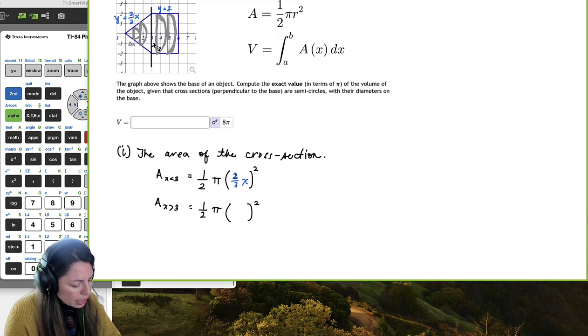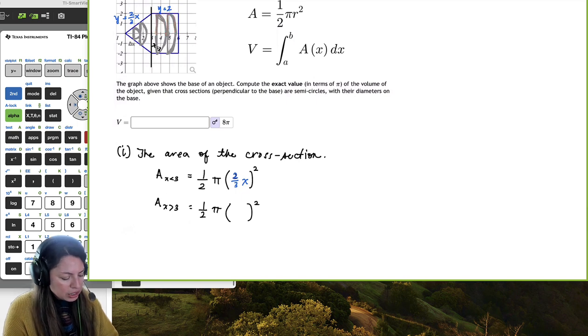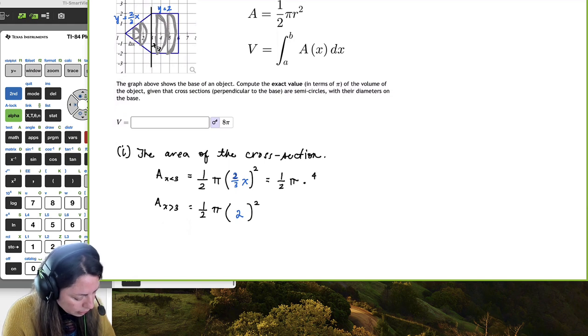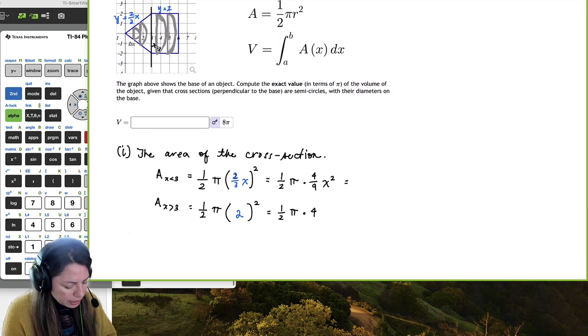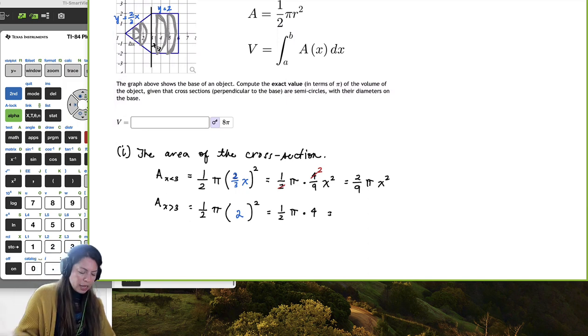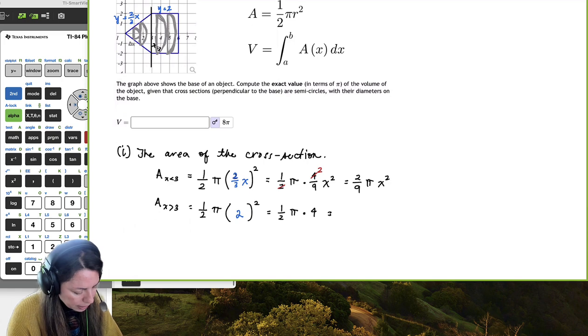Okay, but now when we look at when x is to the right of three, but stops at six, that is equal to, again, one-half pi, we're still doing semicircles and the radius squared. Well, what's interesting about this radius is, again, it's a constant function, y equal two. So from the x-axis to the curve, it's just going to be two the entire time. It doesn't matter where I draw it. So it's going to be two and then squared. So if I wanted to simplify this a little bit, I would get one-half pi times four-ninths x squared. And down below, I would get one-half pi times two squared, which is four. So if I just simplify this a little bit, I would get two-ninths pi on the top one, x squared. And then for the one that's to the right of three, I would get, again, this two and four reduce out, and we are left with two pi.